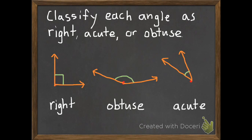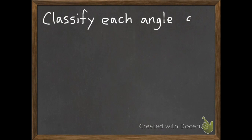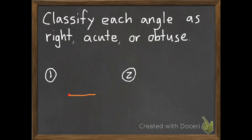Now I think you're ready to do some on your own and I'll check them tomorrow. So here is number one and number two. So the instructions for these first two are to classify each angle as right, acute, or obtuse.